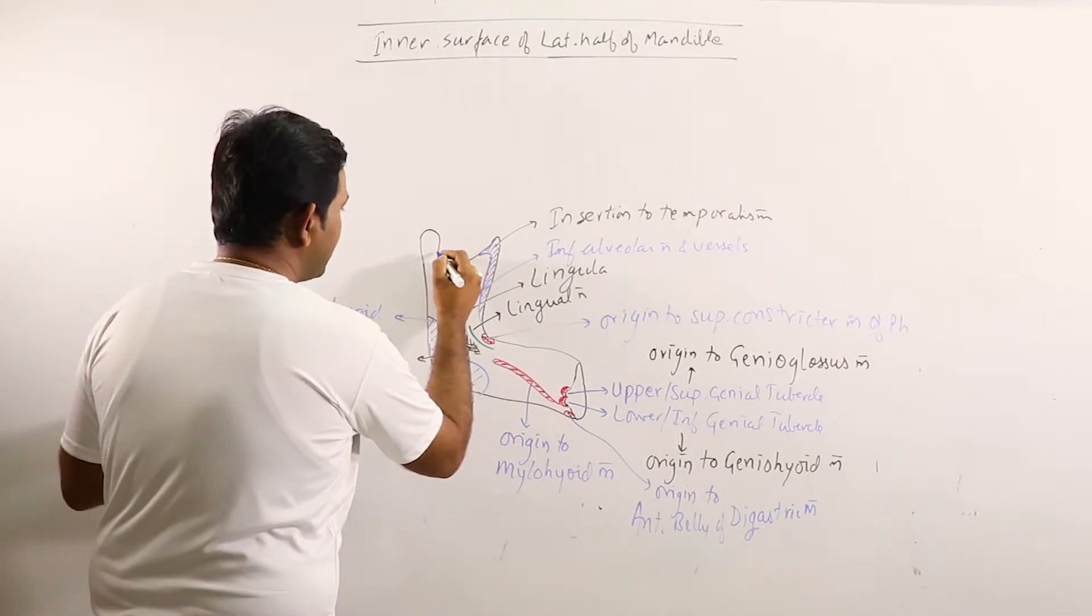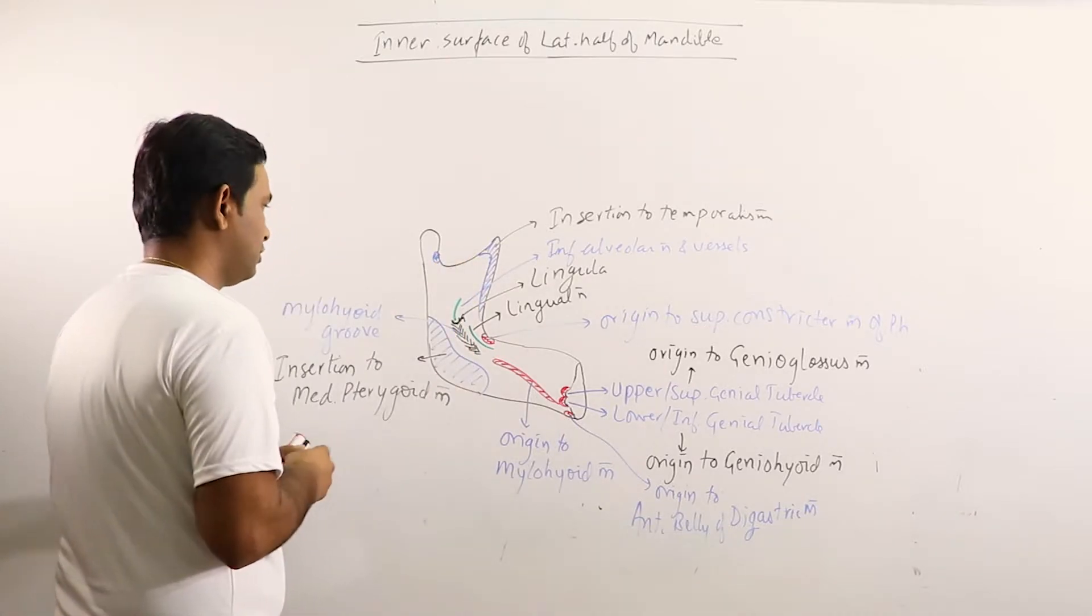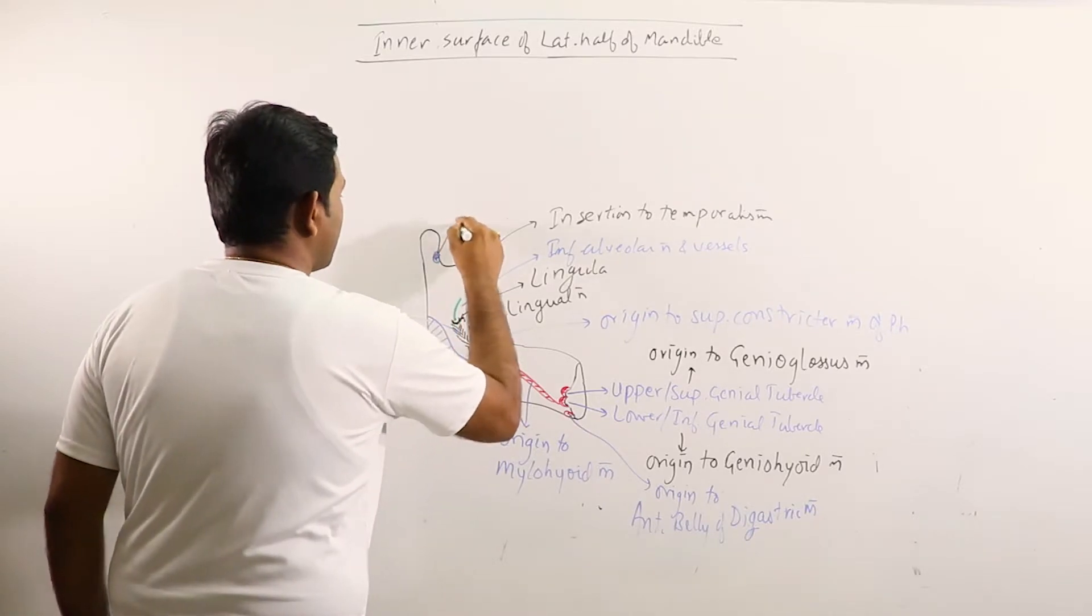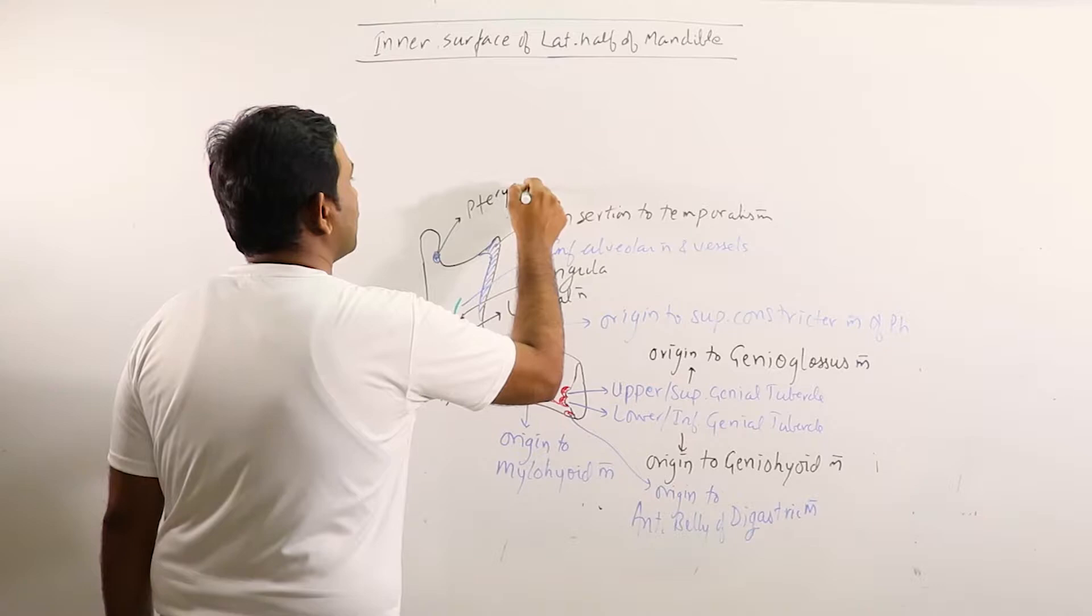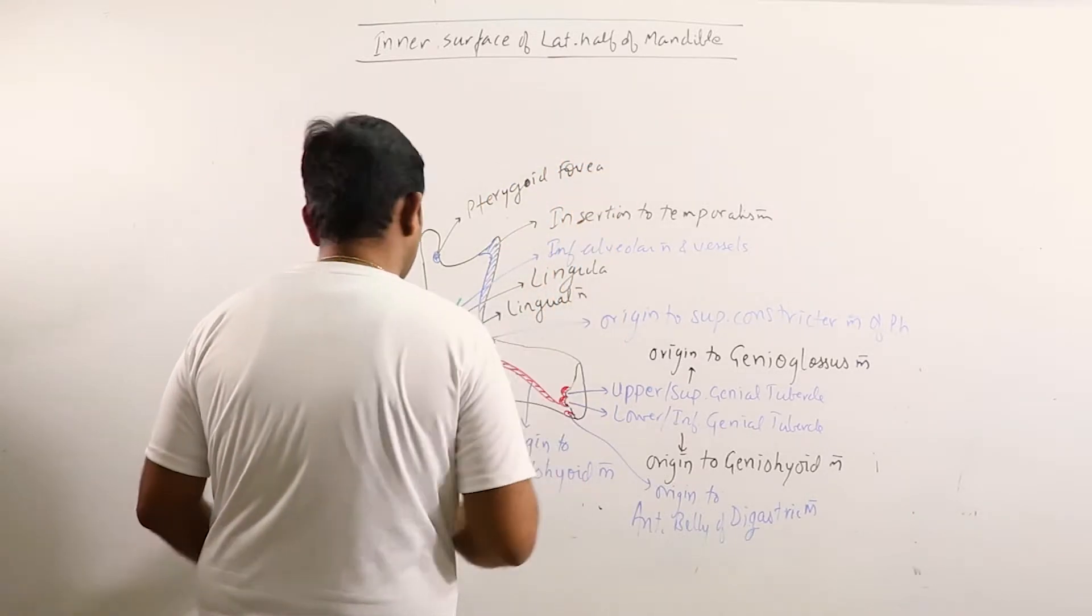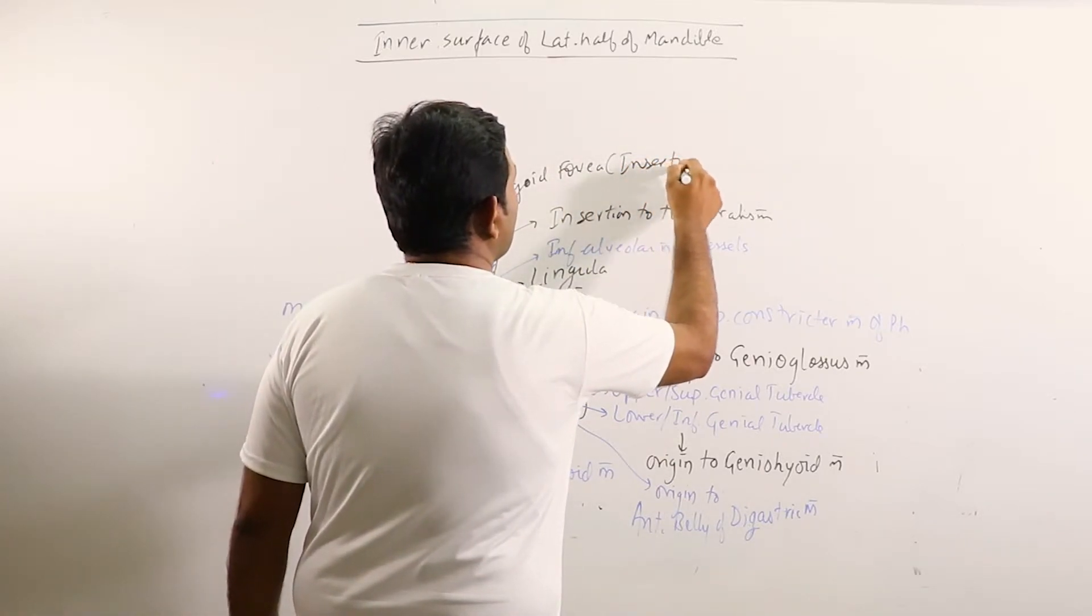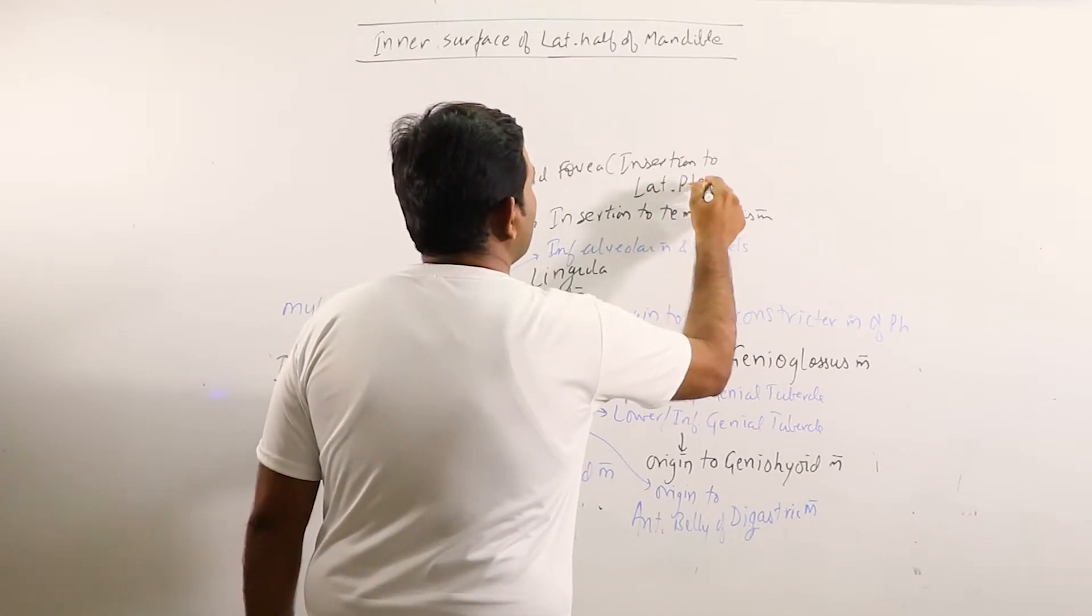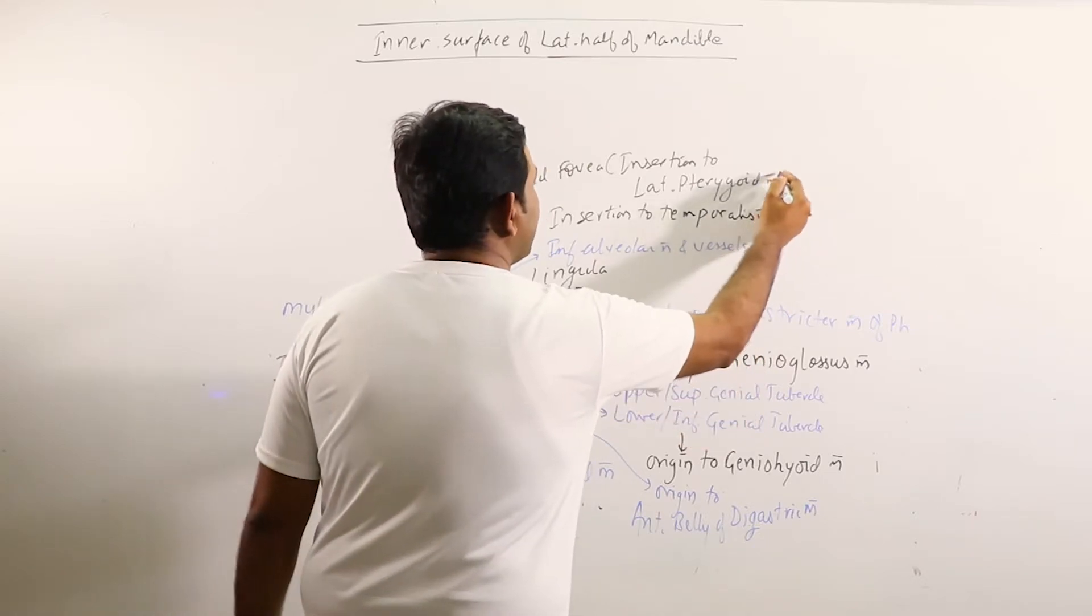Here on the anterior medial surface of the neck of condyloid process, this is basically pterygoid fovea which gives insertion to lateral pterygoid muscle.